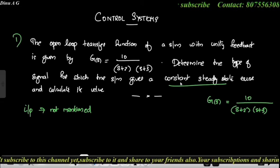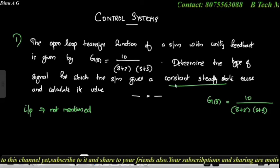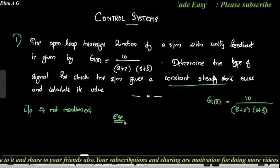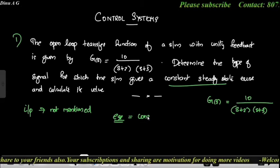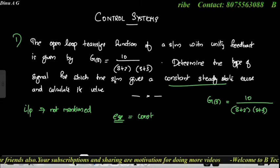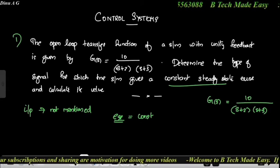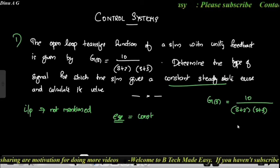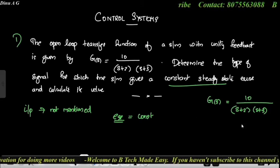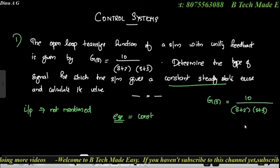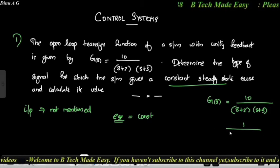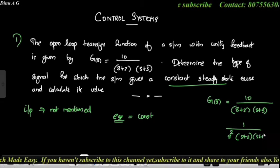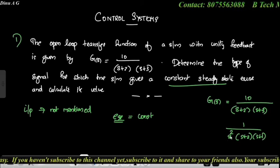It gives a constant steady state error — ESS constant. We will find out the type of the system. The denominator of s in the power determines type. For example, if the denominator has 1 divided by s² into (s+2)(s+1), this is a Type 2 system.